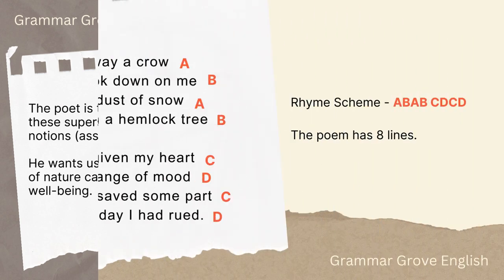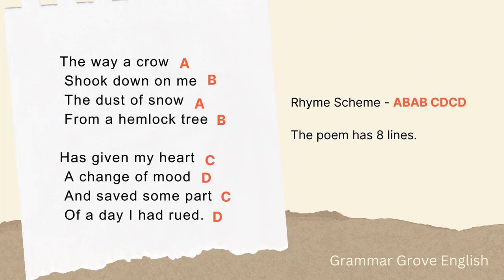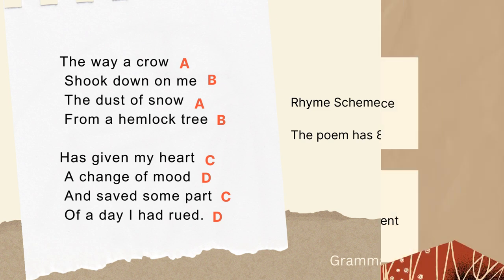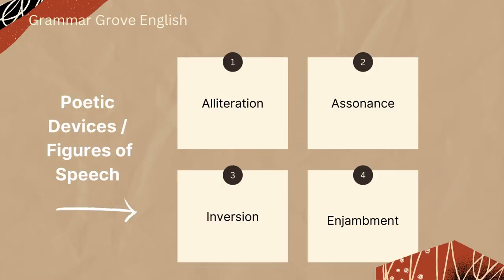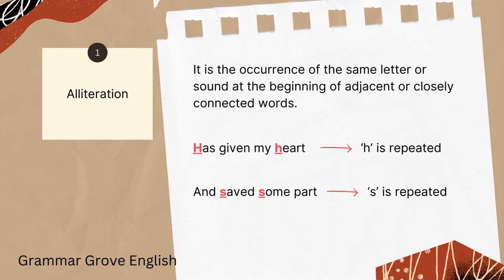Now let's take a look at the poetic devices or literary devices of the poem. First of all, the rhyme scheme of this poem is ABABCDCD. It is an eight-line poem. The poetic devices present include alliteration, assonance, inversion, and enjambment.